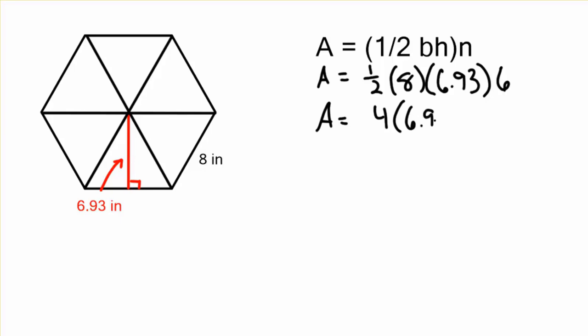One half of 8 is 4 times 6.93 times 6. Use our calculator. 4 times 6.93 is 27.72. And we still need to multiply that—that's the area of one of the triangles. We need to multiply that times 6 because that's how many triangles there are. And so the total area is 166.32. Now remember we're doing inches times inches. Area is the number of little squares in there. It's inches squared.